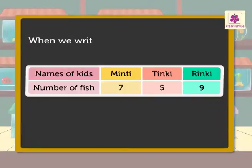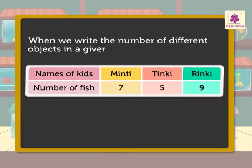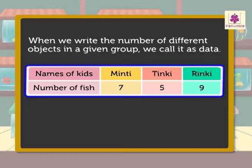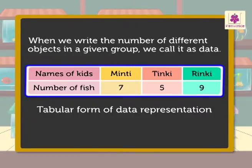When we write the number of different objects in a given group, we call it as data. Here the data is number of fish. When the given data is represented in a table, it is called as the tabular form of data representation.